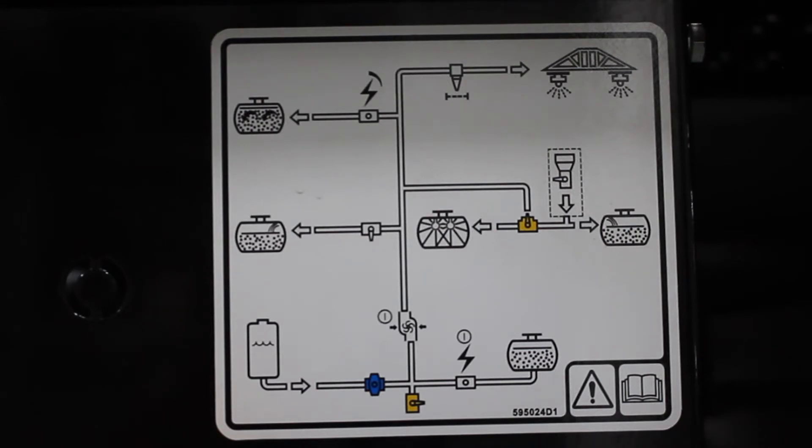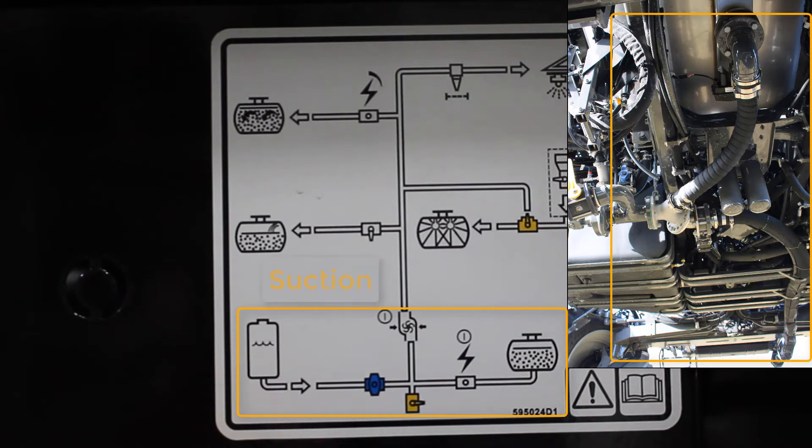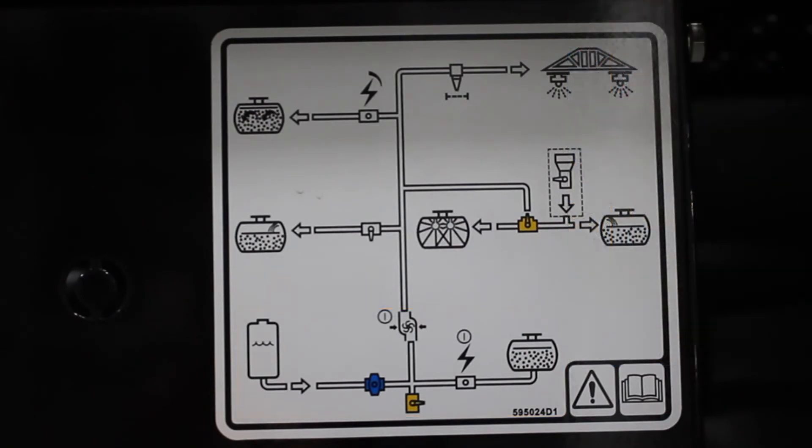We're going to start with looking at this decal here. It gives us a diagram of all the different functions. First thing we want to do is locate the product pump on the decal. Now everything on the bottom side of the product pump is on the suction side of the pump. Everything on the top is our pressure side.